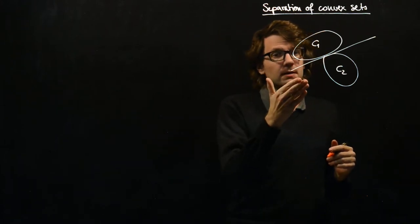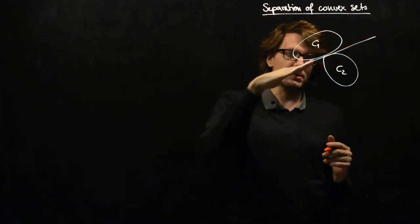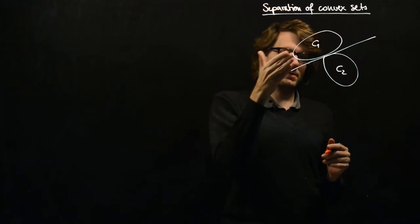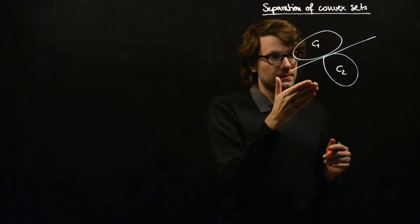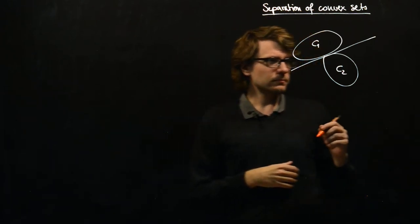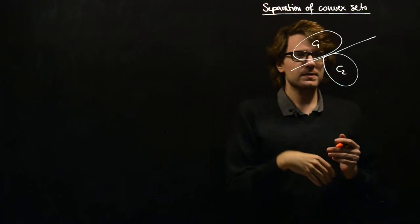So in our example here, this is a two-dimensional example. The hyperplane is a one-dimensional line and it has two sides, and C1 is assumed to be on one side and the other set C2 is on the other side.